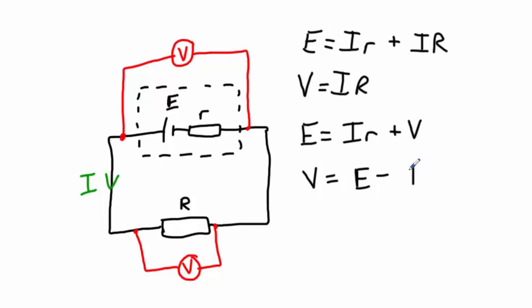And now we can choose to rearrange this to get V equals E minus Ir. Now you may sometimes see this written instead as the terminal voltage equals the EMF, the electromotive force, take away the lost volts.